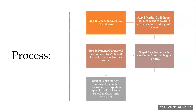Here's what the process looks like. Step one, the school submits an ACS referral form. Step two, within 24 to 48 hours, students receive an email asking them to create an account and log in to Canvas, the learning management system. Step three, parents will be contacted by ACS staff to verify that the student has access to Canvas. Step four, the ACS teacher contacts the student and the student begins working. Step five, when the student returns to school, an assignment completion report will be submitted to the sending schools to share with teachers.